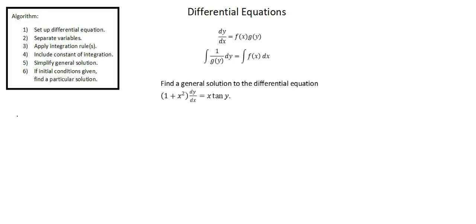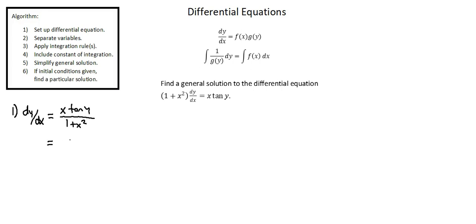Let's go to the algorithm. Step one: set up the differential equation. In our case the differential equation is already set up, though in some problems you'll need to translate a word problem into a differential equation. Here in step one we'll manipulate the equation into the form we're looking for: dy over dx on the left side. To isolate dy over dx, we divide both sides by 1 plus x squared, giving x tangent y divided by 1 plus x squared on the right. We can clearly see the product of the x function — x over 1 plus x squared — and the y function — tangent y.